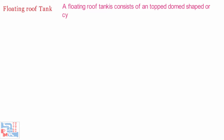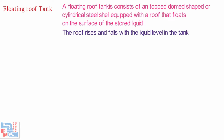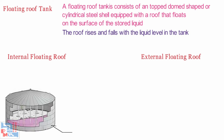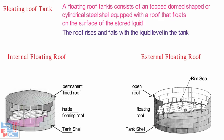Now comes the Floating Roof Tank. A floating roof tank consists of an open-topped, dome-shaped or cylindrical steel shell equipped with a roof that floats on the surface of a stored liquid. The roof rises and falls with the liquid level in the tank. There are two types: Internal Floating Roof and External Floating Roof. Internal Floating Roof Tanks have both a permanent fixed roof and a floating roof inside the tank on the liquid surface, or supported on pontoons several inches above the liquid surface. External Floating Roof Tanks are equipped with a rim seal system which is attached to the roof perimeter and contacts the tank wall, sliding against it as the roof is raised and lowered.